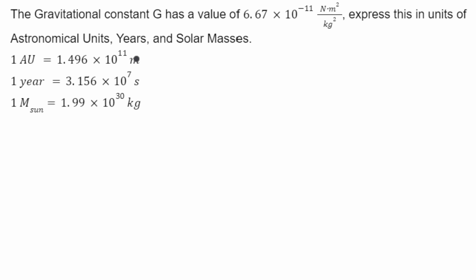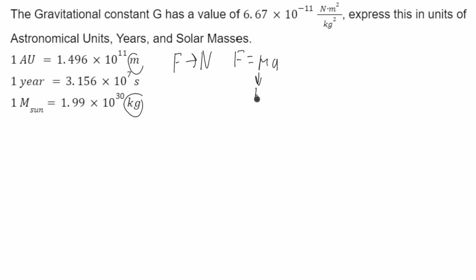I have meters and kilograms as units for G, but the units for G also has newtons and seconds. So I have to convert newtons into something that has seconds, meters, and kilograms. I know that newtons are the units of force, and that force is equal to mass times acceleration. Mass has units of kilograms, and acceleration has units of meters per second squared. So newtons have units of kilograms times meters over seconds squared.